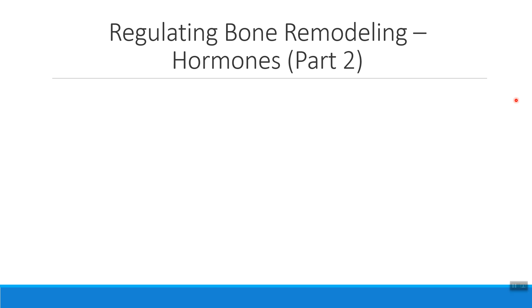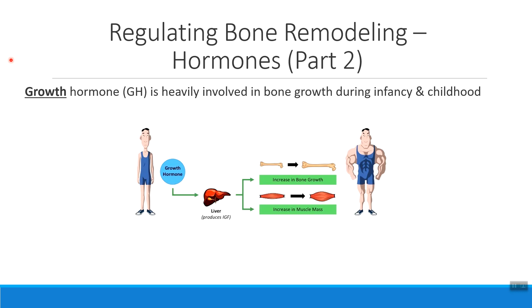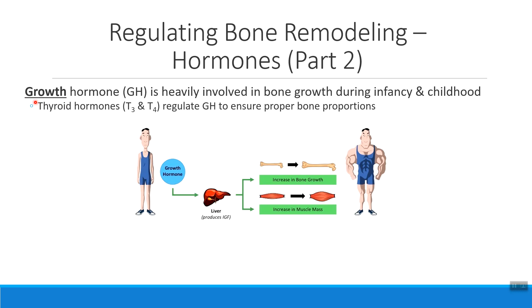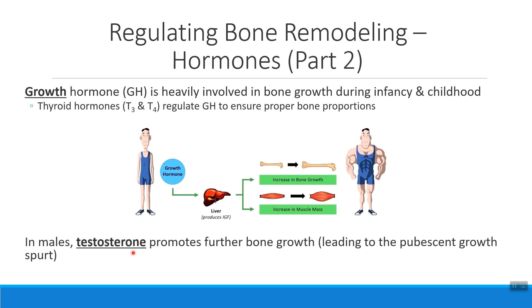The other hormones that regulate bone remodeling are growth hormone and the thyroid hormones. Growth hormone and thyroid hormone work together when building bone tissue for the first time. Growth hormone helps the body grow, and its activities are paired with the two thyroid hormones, T3 and T4, making sure bones grow in the correct proportions. In males, testosterone also impacts growth — enabling the male growth spurt typically seen around puberty. Growth hormone and thyroid hormones are involved in both male and female growth, while testosterone is the reason males tend to be a little taller than females.